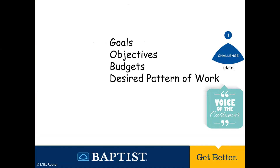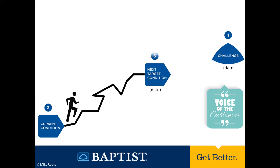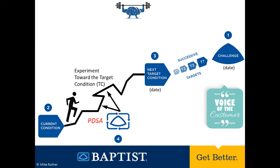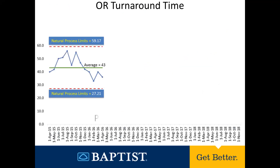They tend to be needs-based, or what must we achieve? Then we look at the current condition in light of that challenge, and we go on to look at the next target condition. The magic word there is 'next,' because it implies there are multiple target conditions on our way to the challenge. Then we start experimenting our way through the obstacles on the way to the target condition and ultimately towards the challenge. This is what we call a meta routine — it stays the same regardless of the circumstances. It's a routine way of acting and thinking.